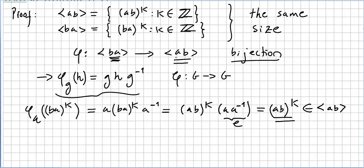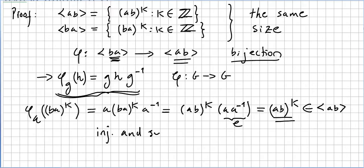I just need to show that φ is a map from ⟨ba⟩ to ⟨ab⟩, which we just verified, and the fact that φ is a bijection was proved in the previous video. So φ here is a bijection. If you want, re-watch the previous video and you can easily check that it is both injective and surjective.